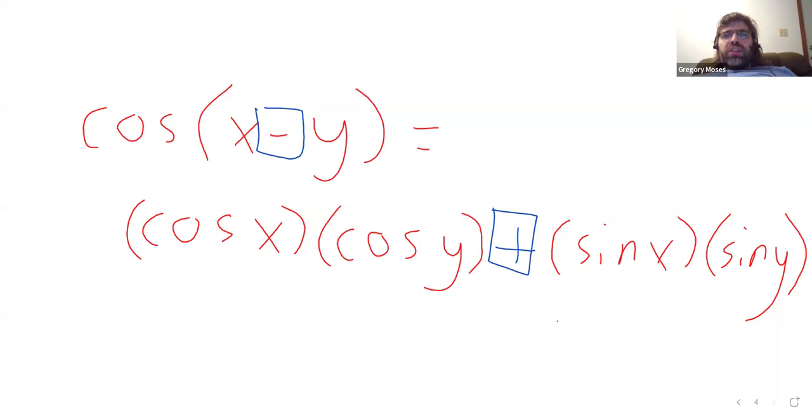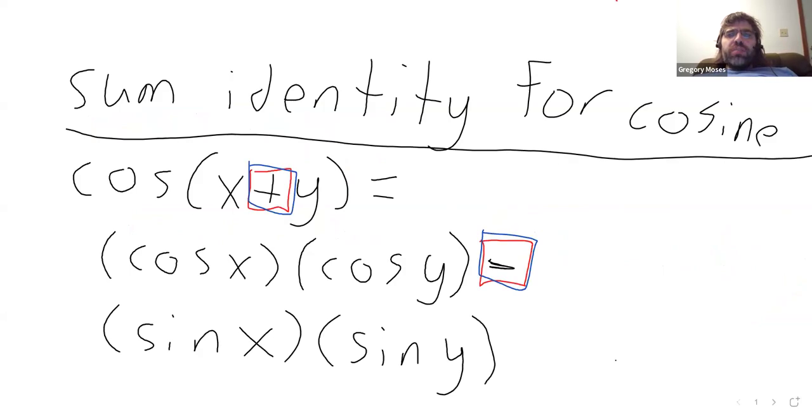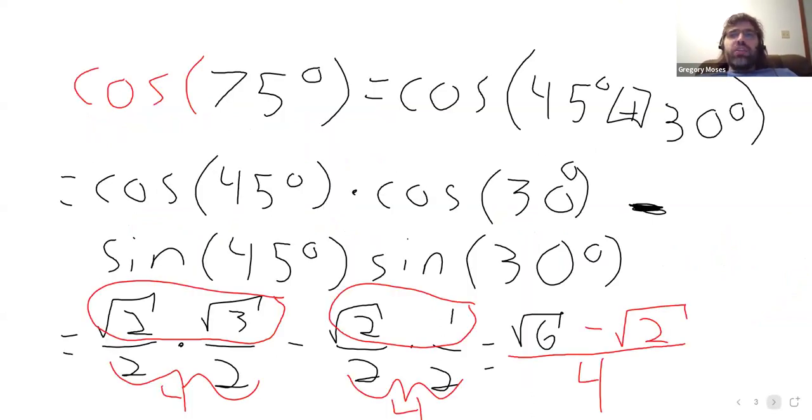I would not necessarily worry about committing these to memory. I think it's more important to be able to use these. I'll say this right up front. I did not memorize this formula as an undergraduate. It's just something I look up whenever I want to use it. But I can use it. I can look at the 75, I can say, okay, this is a sum. And then once I've recognized that this is a sum, I can plug and play and get an answer. So rather than worrying about committing stuff to memory, I'd worry more about being able to use these identities. Like we do on this frame.